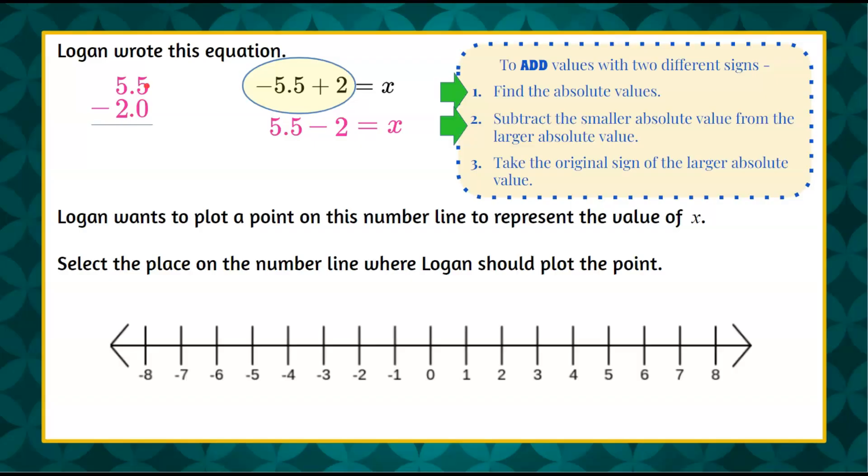So when we subtract, we start from right to left. 5 subtract 0 is 5. Bring down your decimal point. 5 subtract 2 is 3.